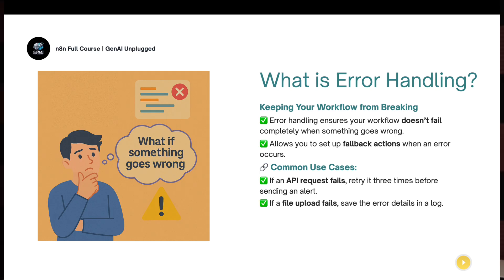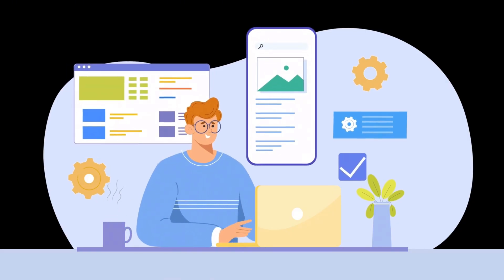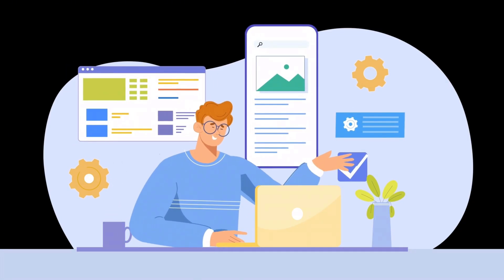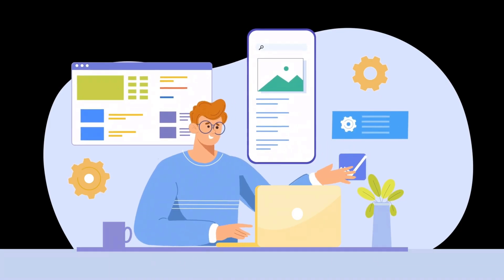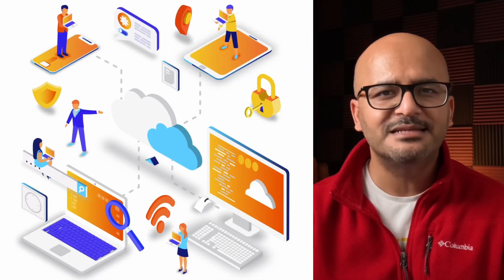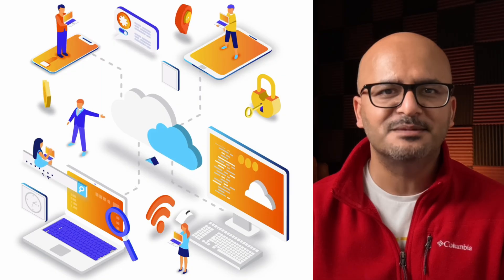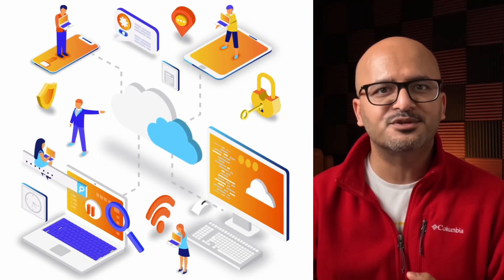Similarly, if a file upload fails, you can save the error details in a log file. If an email cannot be sent, you can queue it for later. If one record has an error while uploading multiple records, you can log the error but continue processing the remaining records. One record's failure should not fail the entire workflow or halt the execution of other records.